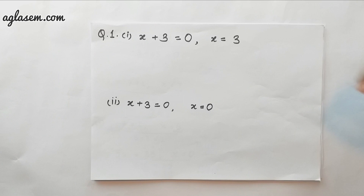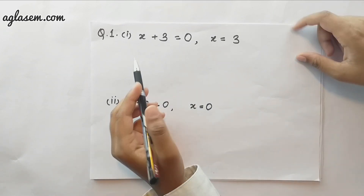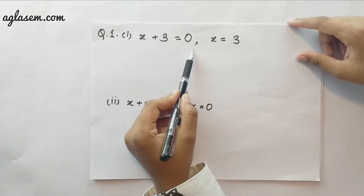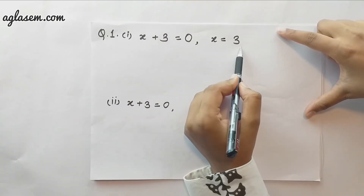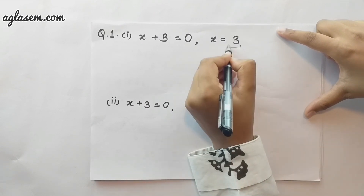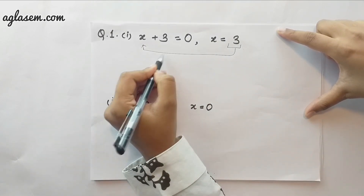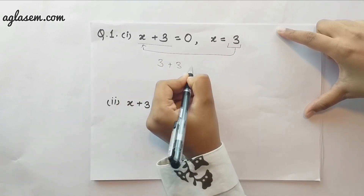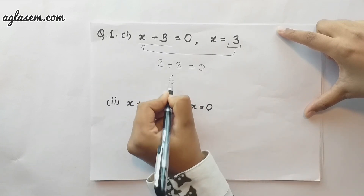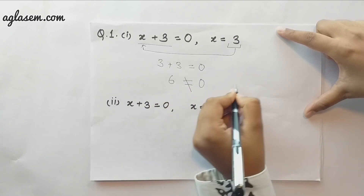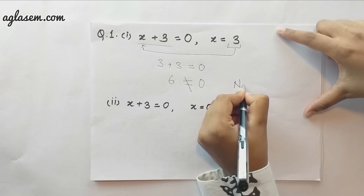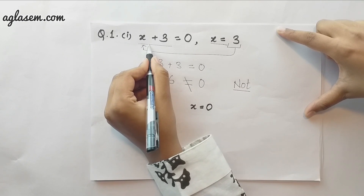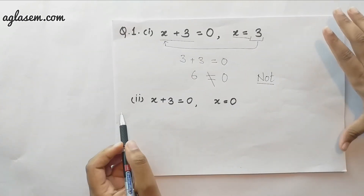Let's start with the first question. The equation is x plus 3 equals to 0, and the value of x given here is 3. We will put the value of x into the equation and solve the left hand side: 3 plus 3 equals to 0. 6 is not equal to 0, hence this value of x does not satisfy the equation.